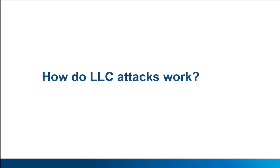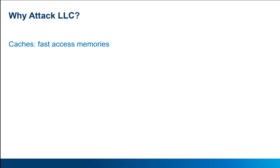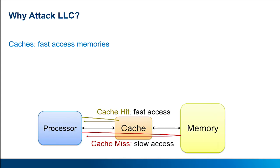So let's take a look at how they work. The first thing is to define what a cache is. Basically, it's a small memory placed between the processor and the main memory that holds recently accessed data and that you can access faster. Instead of going to main memory all the time, you go to the cache and retrieve the data you need faster.